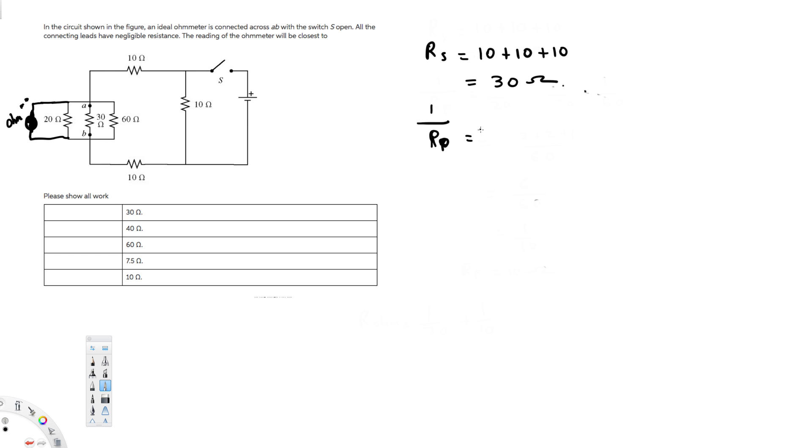But how about parallel? Parallel, we add them like this: 1 over Rp parallel is equal to 1 over 60 plus 1 over 30 plus 1 over 20.